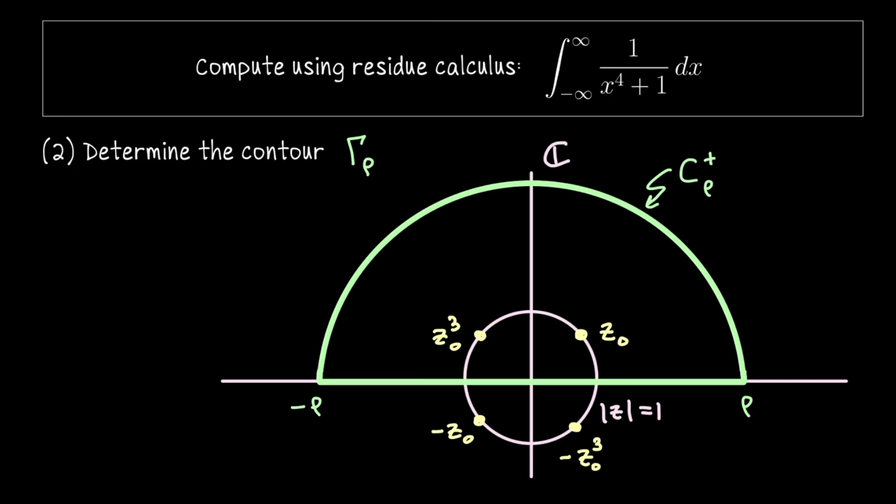Okay within this contour we have enclosed two of the four singularities for our function f of z. So for suitably large values of the radius rho the singularities z naught and z naught cubed are enclosed within this semicircle. Since we're actually doing an integral from negative infinity to infinity you want to imagine that rho is going to infinity so there's no worry about actually enclosing these. So our next step so that we can use Cauchy's residue theorem is to compute the residue of f at each of these singularities.